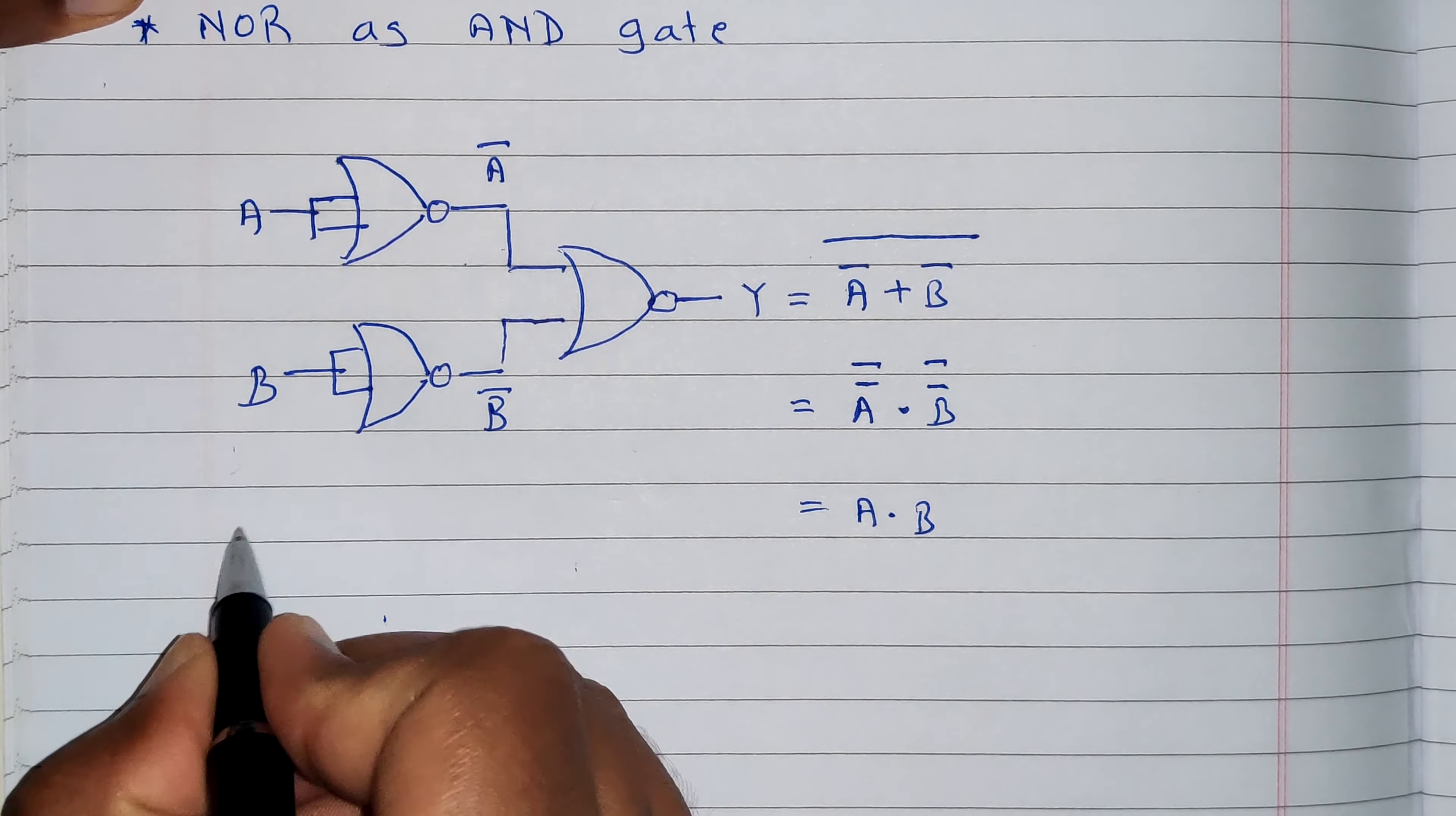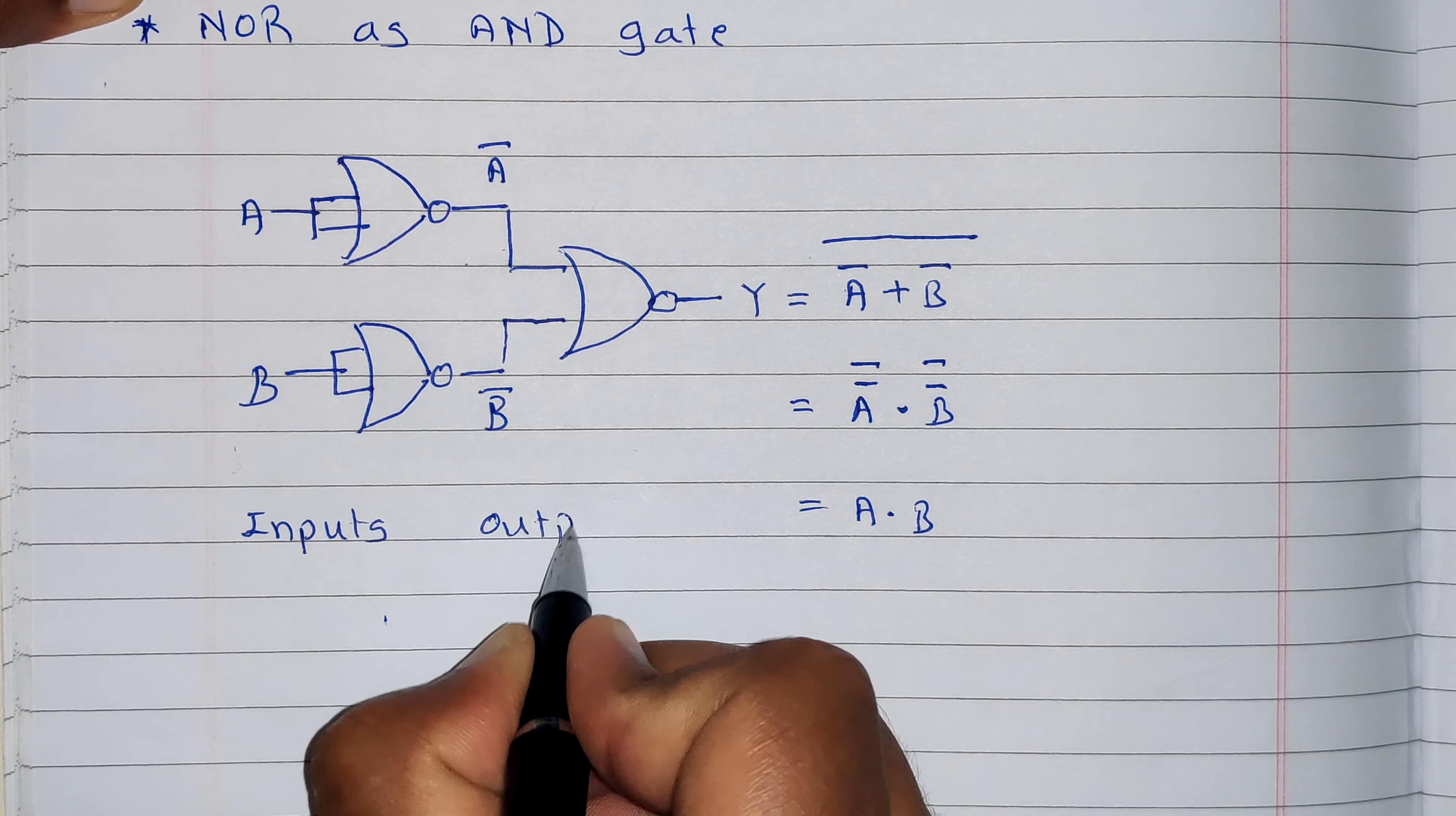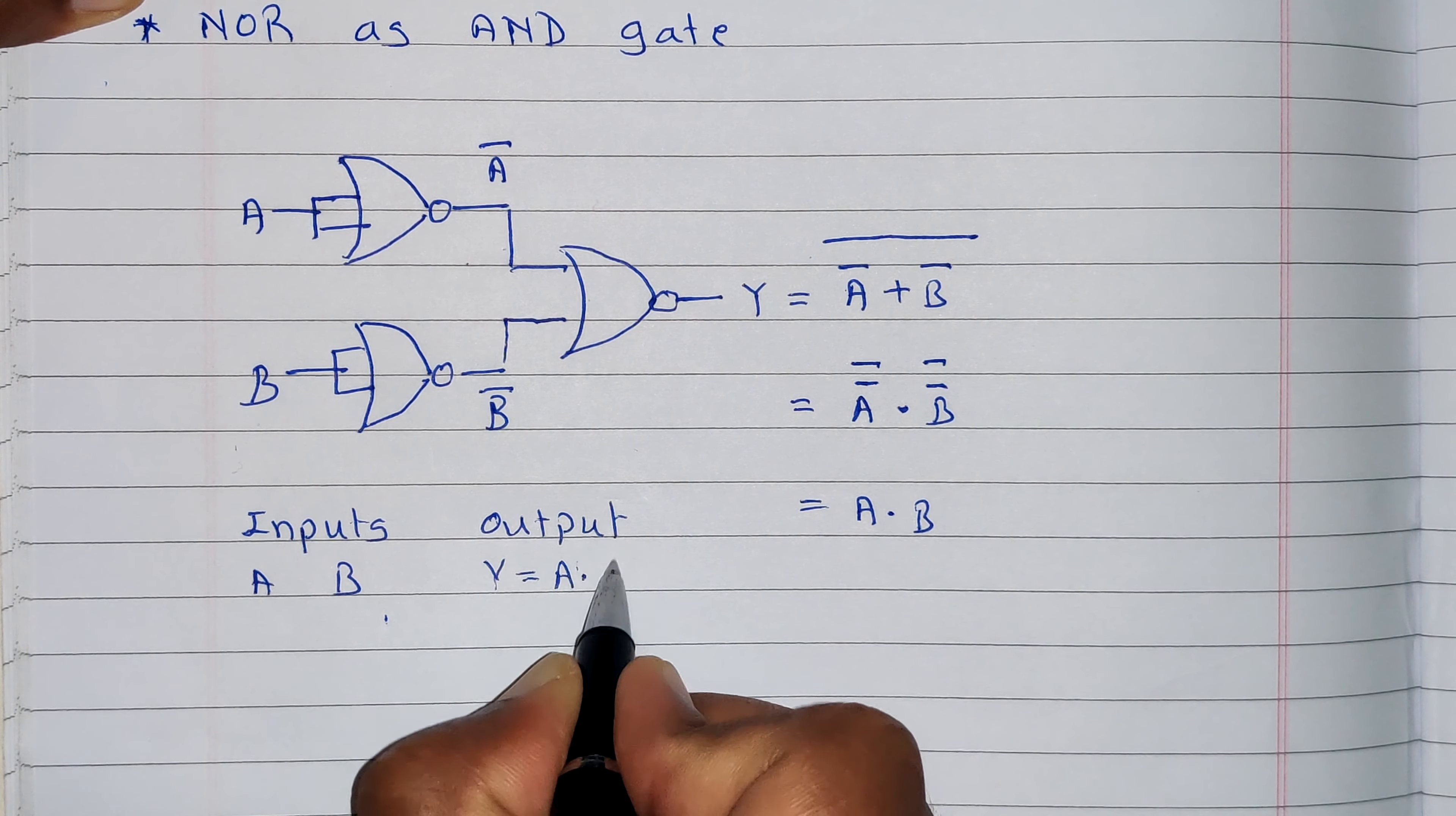Truth table is nothing but a table of inputs and output. Inputs are A and B. Output is Y, which is A dot B.